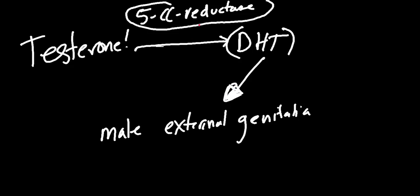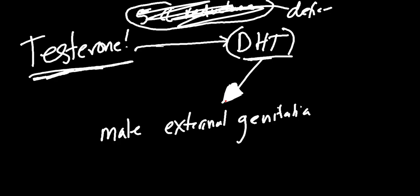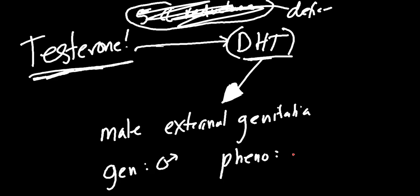So we're going to need testosterone to develop our Wolffian duct system, and we're going to need dihydrotestosterone to really stimulate our external genitalia. If we had a 5-alpha reductase deficiency, we'd only have testosterone. We'd still be male because our Sertoli cells would be blocking our female system, and we'd still be male internally because testosterone would develop the Wolffian duct system. But without DHT, externally you'd have an ambiguous phenotype — not well-developed external genitalia.